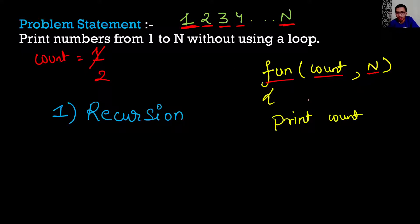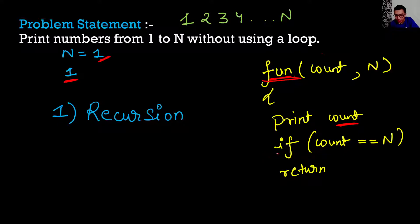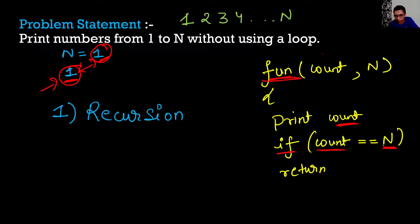Inside this function fun, I'll simply print the count. If count was initially 1, we'd print 1. Now, let's say N is 1 — we only have to print a single integer 1, so count is 1, N is 1, we print 1 and then stop. After printing count, I use an if condition: if count equals N, it means the number we just printed equals N, so we simply return — returning no value means we exit the function fun.